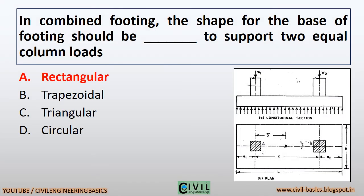In combined footing, the shape for the base of footing should be rectangular to support two equal column loads. You can see the diagram of combined footing with a rectangular base, showing the longitudinal section and plan for rectangular combined footing.